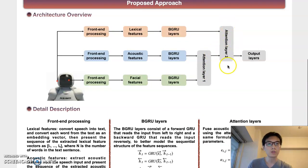Then attention layer 2 fuses lexical features with the fused acoustic facial features. And at last, attention layer 2 feeds the fused lexical acoustic facial features to the output layers. And the output layers will generate the estimated emotion based on the fused features.